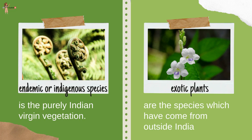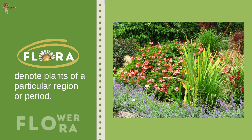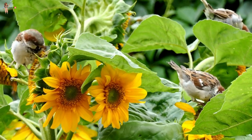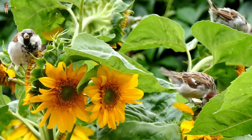The virgin vegetation which is purely Indian is known as endemic or indigeneous species, but those which have come from outside India are termed exotic plants. The term 'flora' is used to denote plants of a particular region or period. Similarly, the types or species of animals are referred to as 'fauna'.